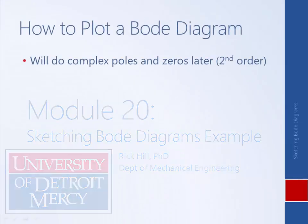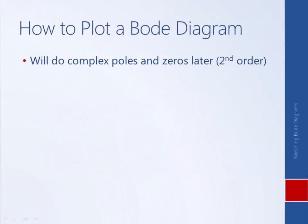That almost completes our library of components. The only things we have left to examine are complex poles and complex zeros, as opposed to simple real poles and simple real zeros. But we'll discuss those in just a little bit. Now that we have our library of components memorized, we can apply approach number two to drawing Bode diagrams. The first step is to put the system into Bode form — that is, put it into a form TS plus one.